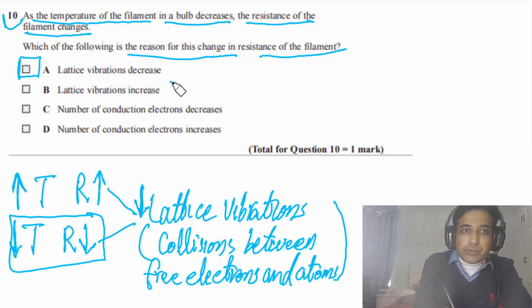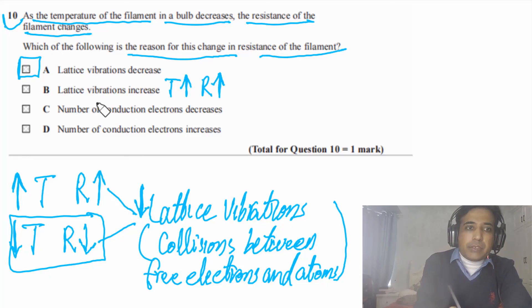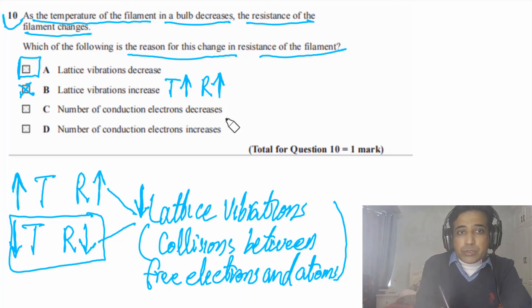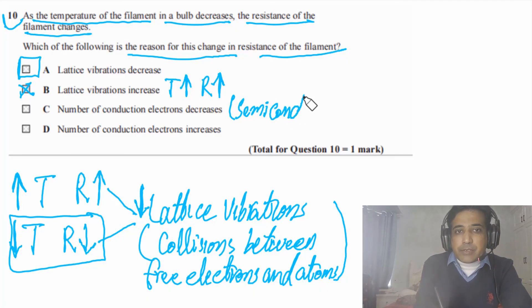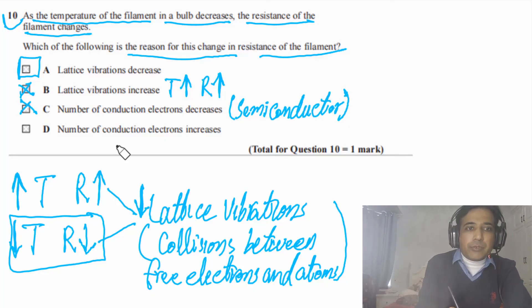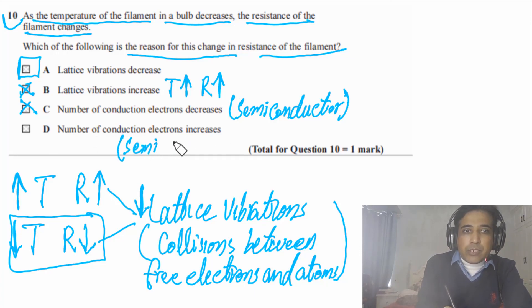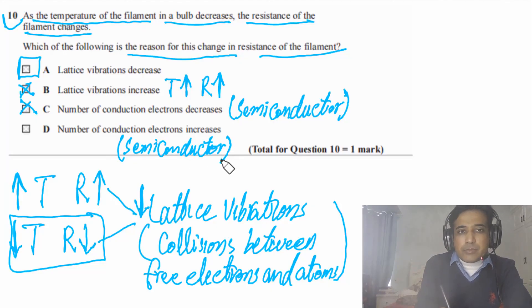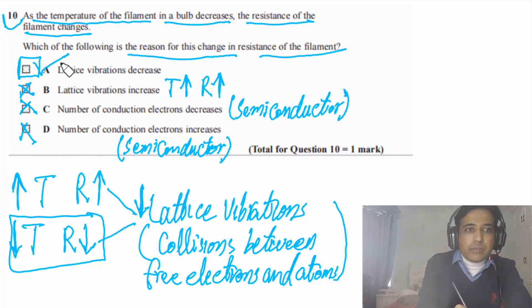Looking at the options: lattice vibrations decrease — yes, when temperature decreases, lattice vibrations decrease, so resistance decreases. This is a possible answer. Lattice vibrations increase — this is true only when temperature increases, so not correct here. Number of conduction electrons decrease — this applies only to semiconductors, not to a metal filament. Therefore, the answer for Question 10 is A.